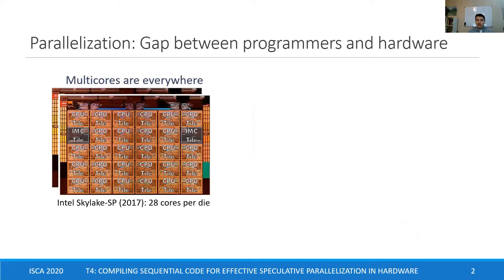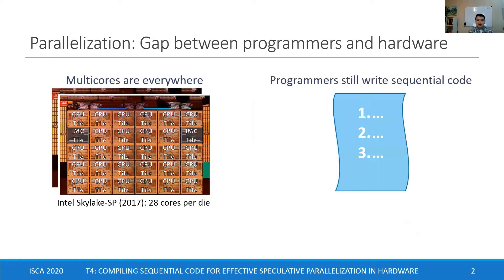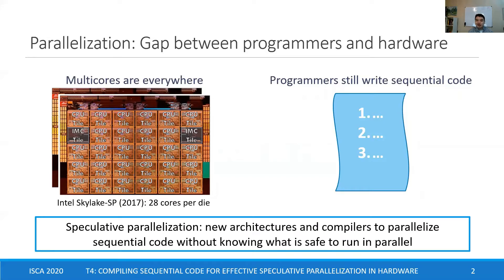We've all had multi-core machines for years, but most programmers struggle to use multi-core parallelism. Programmers find it much easier to write sequential programs, which are hard to parallelize in general due to data-dependent behavior that prevents compilers from knowing what code is safe to run in parallel. To bridge the gap between sequential programs and parallel hardware, we build on recent work in speculative parallelization, which uses new architectural and compiler techniques to parallelize sequential code without knowing in advance what code is safe to run in parallel.